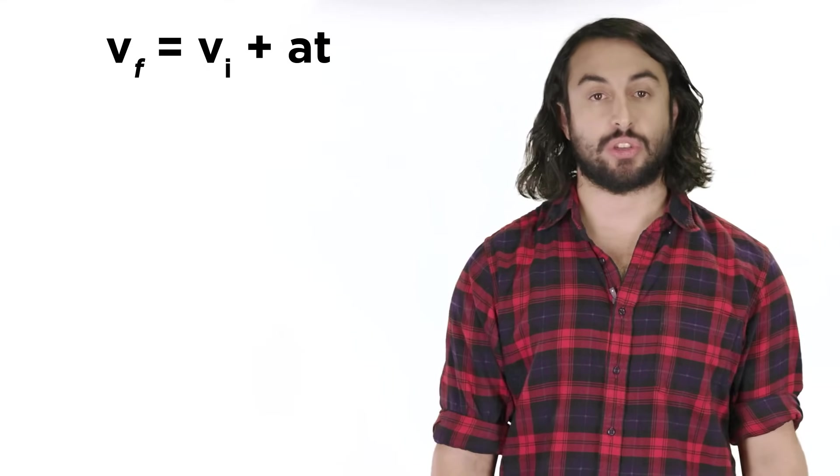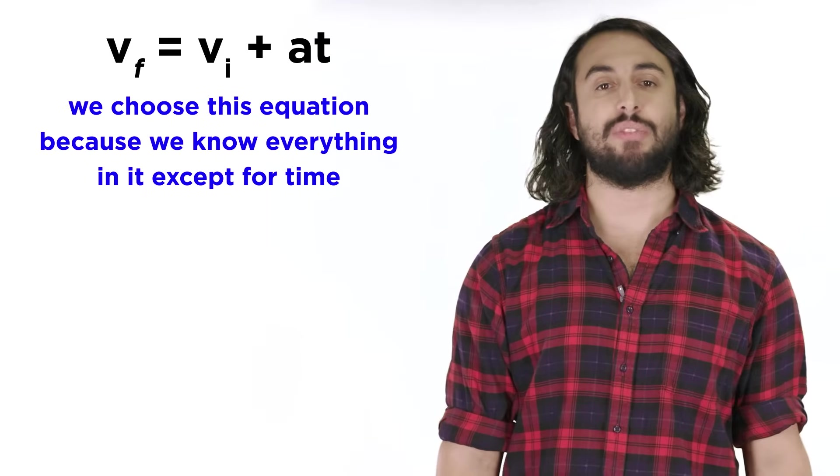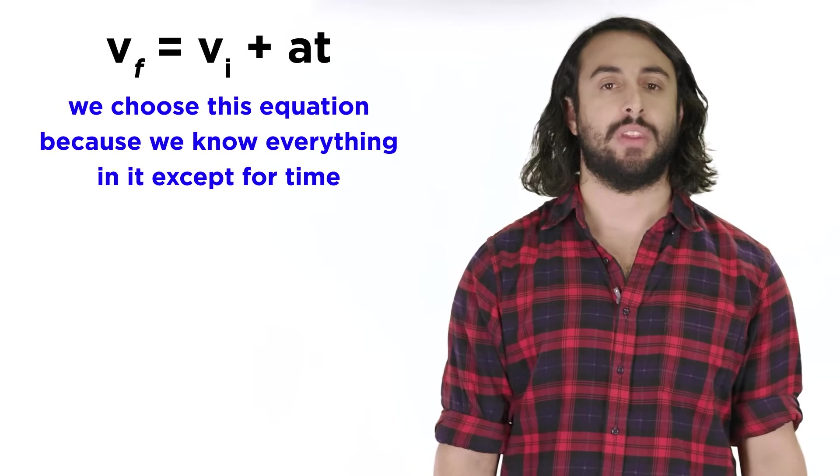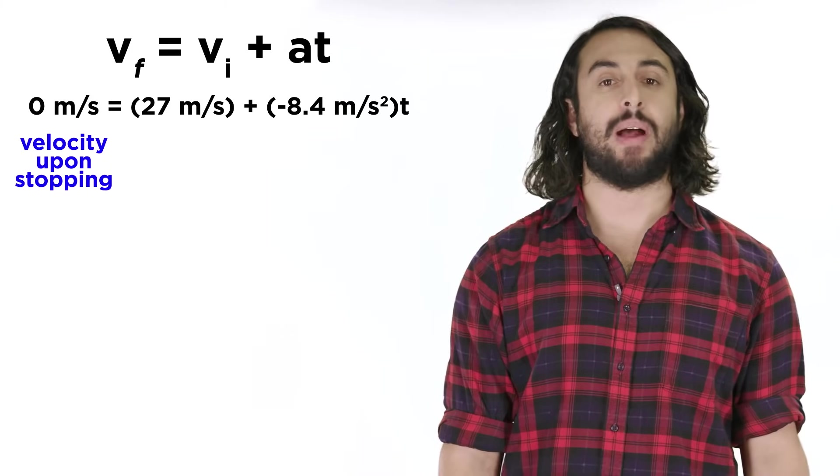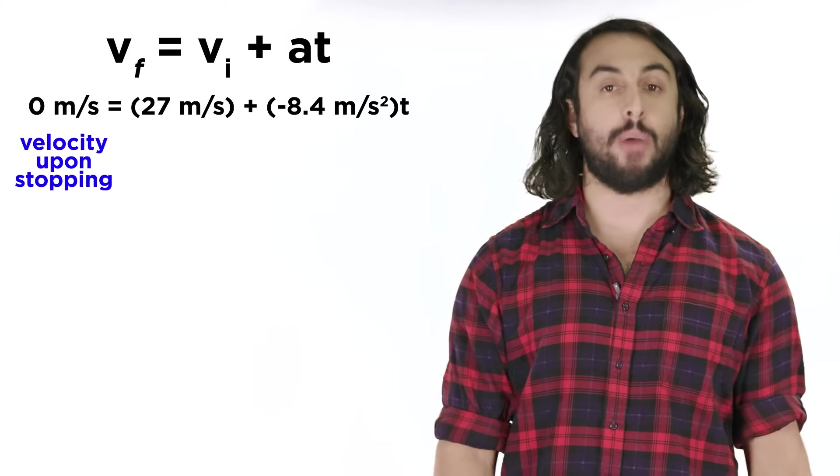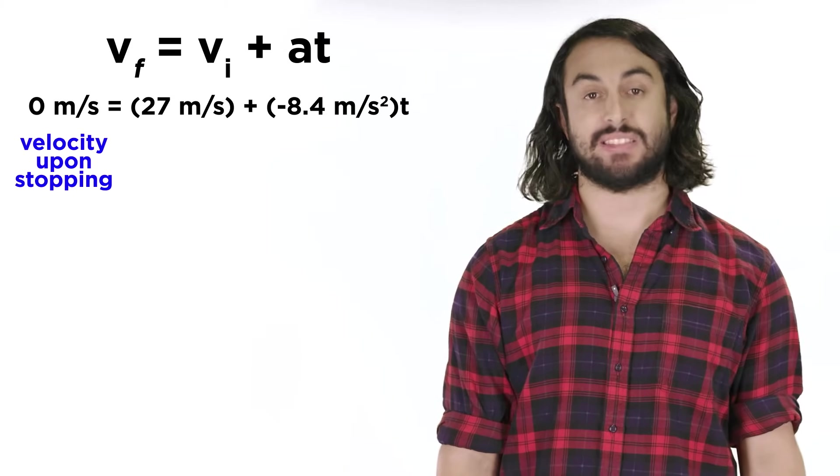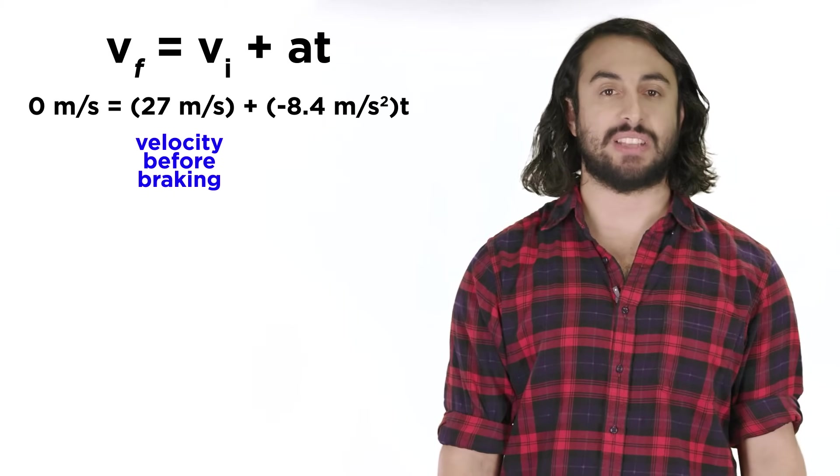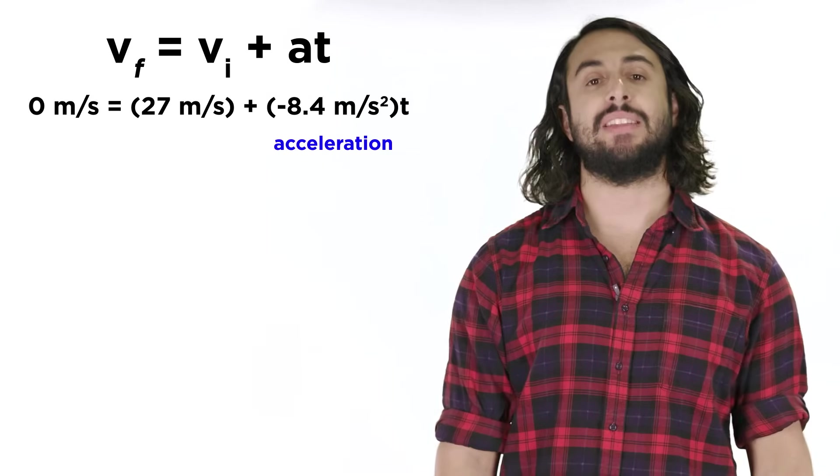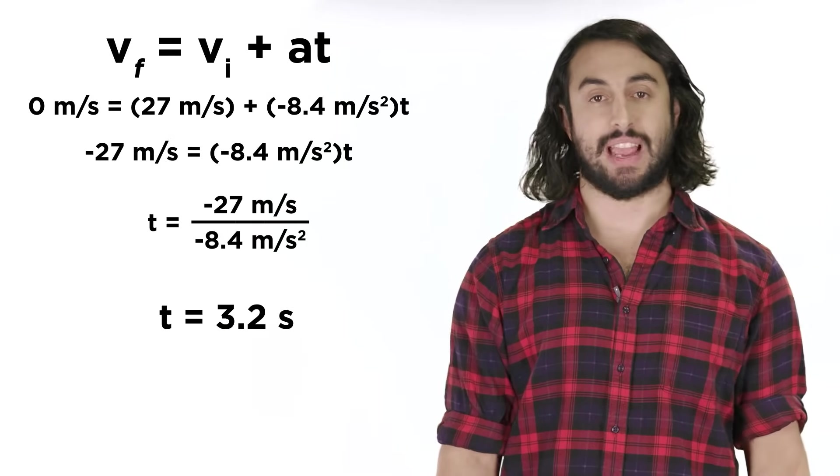Once again, let's use this equation to solve for time. It must be this equation because we know everything in it except for time. For velocity, let's plug in zero, because we are curious about the time elapsed at the moment that the car stops moving, and the velocity when it has stopped moving will be zero. The initial velocity is the 27 meters per second we mentioned, and we can plug in the acceleration, solve for time, and get 3.2 seconds.